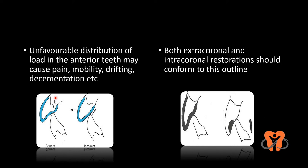When the occlusal morphology is not properly developed, on contact of the lower tooth, two components of forces develop — a vertical component and a horizontal component. This unfavorable distribution of force can result in pain, mobility, drifting, de-cementation, and so on. Therefore, it is important that both extracoronal and intracoronal restorations should conform to the proper occlusal outline — whether it is a crown, composite, amalgam, or GIC — they must not violate the occlusal anatomy.